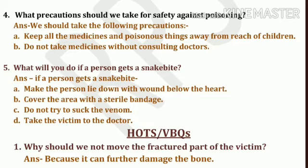Question 4: What precautions should we take for safety against poisoning? Poisoning की case में हमें कौन-कौन सी precautions लेनी चाहिए? Answer: A. Keep all medicines and poisonous things away from the reach of children — बच्चों की पहुँच से सभी medicines और poisonous things दूर रखने चाहिए। B. Do not take medicine without consulting a doctor — बिना doctor की सलाह के कोई भी दवाई नहीं लेनी चाहिए।